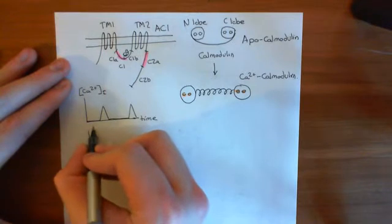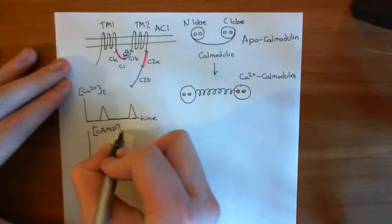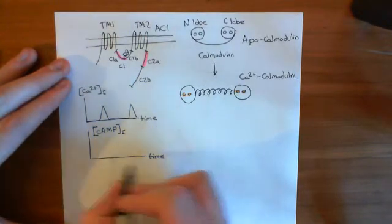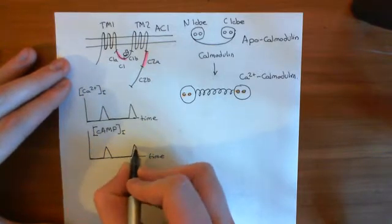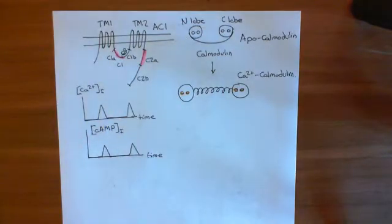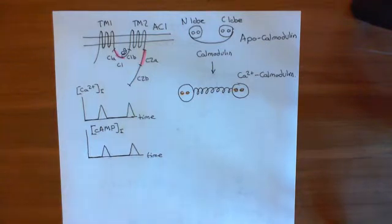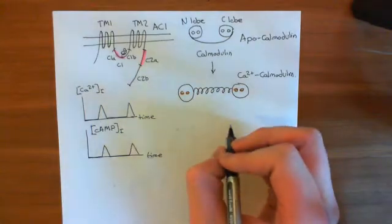If we plot cyclic AMP levels against time, we'd see that when calcium goes up, cyclic AMP also goes up. So we're going to get pulses of cyclic AMP because calcium activates adenylyl cyclase 1. In axon growth cones, you are getting this oscillation — this in-phase oscillation of cyclic AMP levels. Cyclic AMP activates protein kinase A.